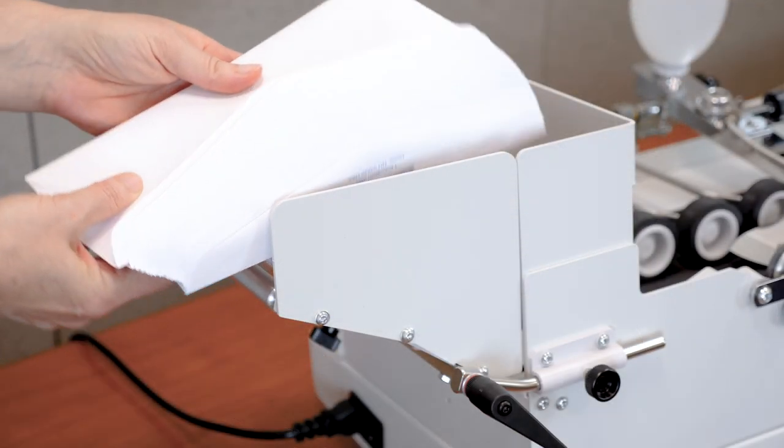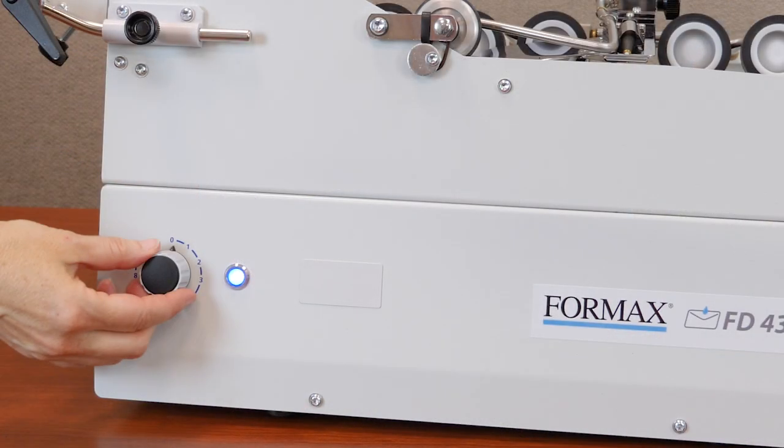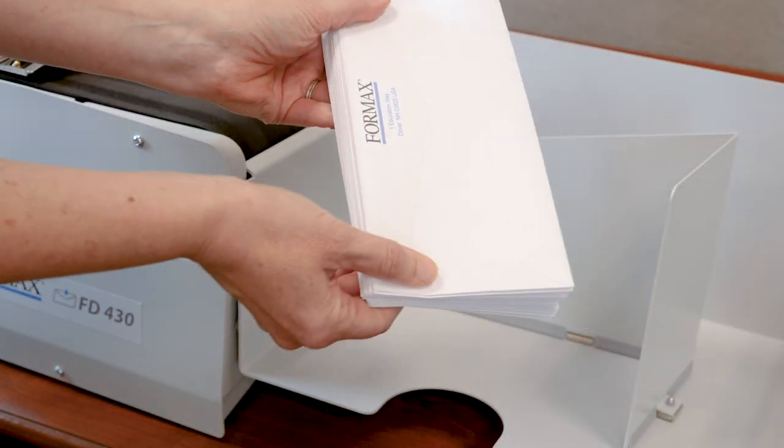Simply place a stack of envelopes in the infeed tray. Choose a processing speed and in seconds your envelopes are sealed and ready for the mail.